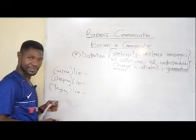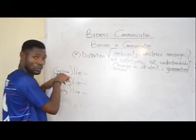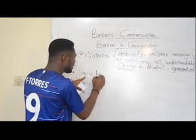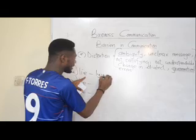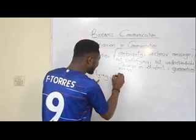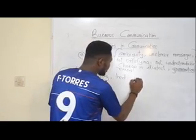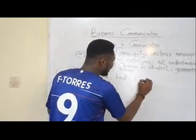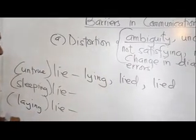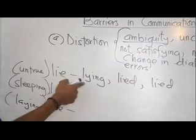Let's say you are laying something — take note: 'untrue' will be a chant. So the continuous tense is 'the person is lying.' The past tense is 'he has lied to you,' and the past participle is also 'he has lied to you' or 'he had lied to you.' That is for the untrue meaning of lying.